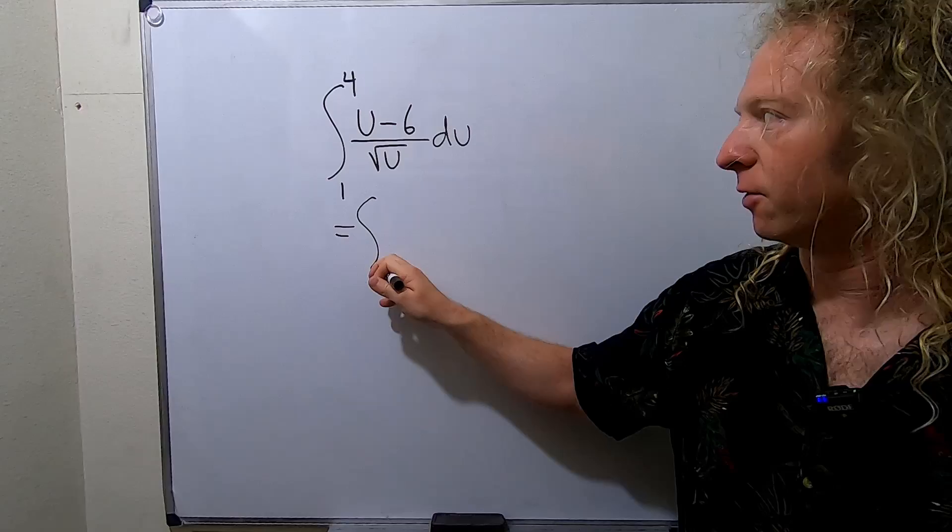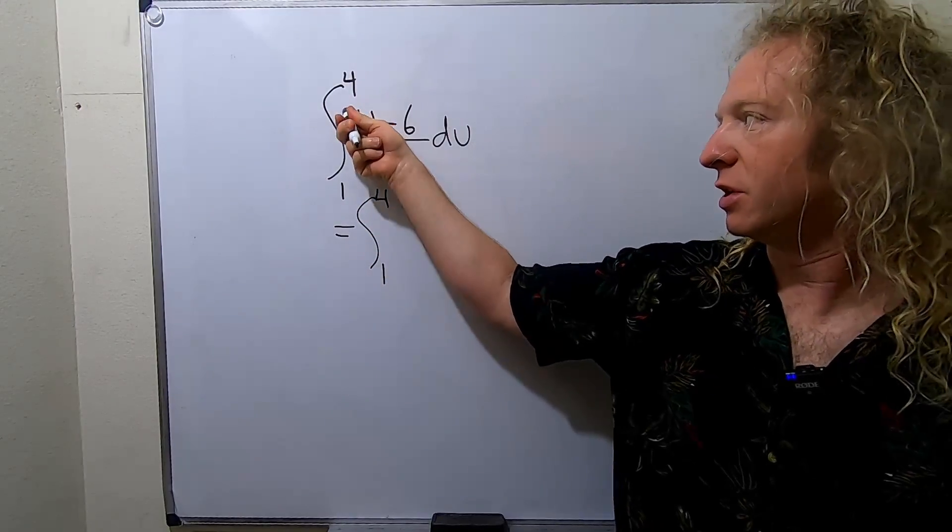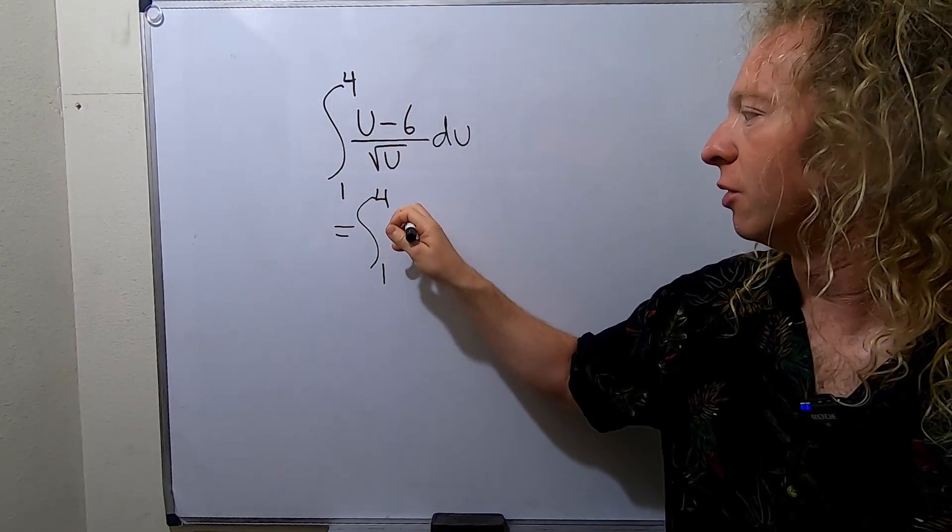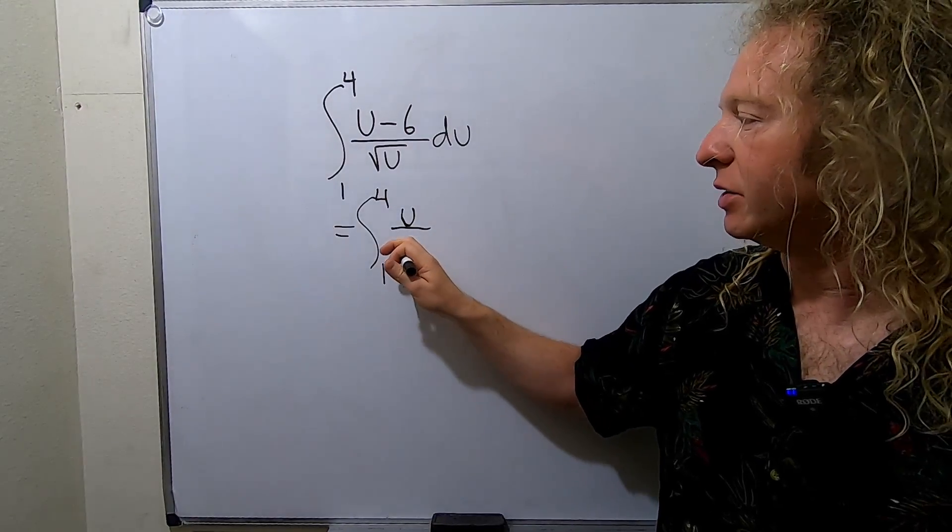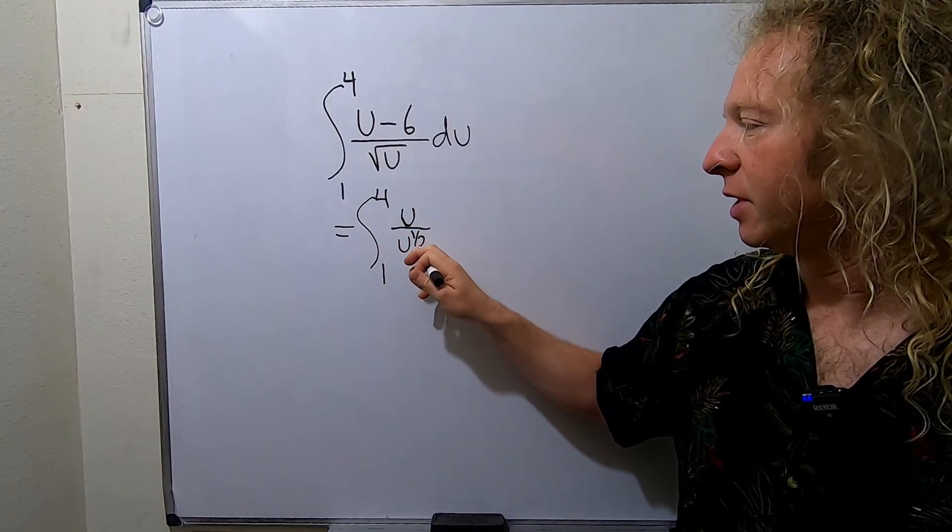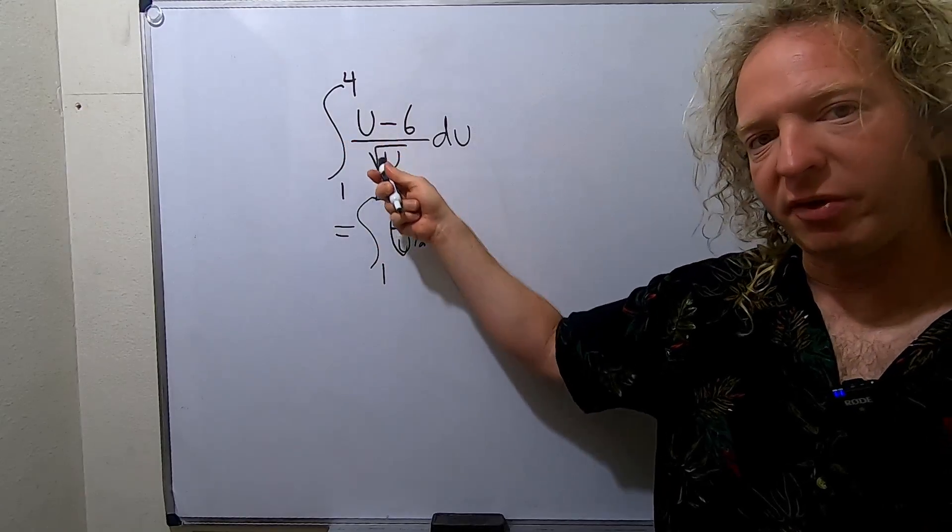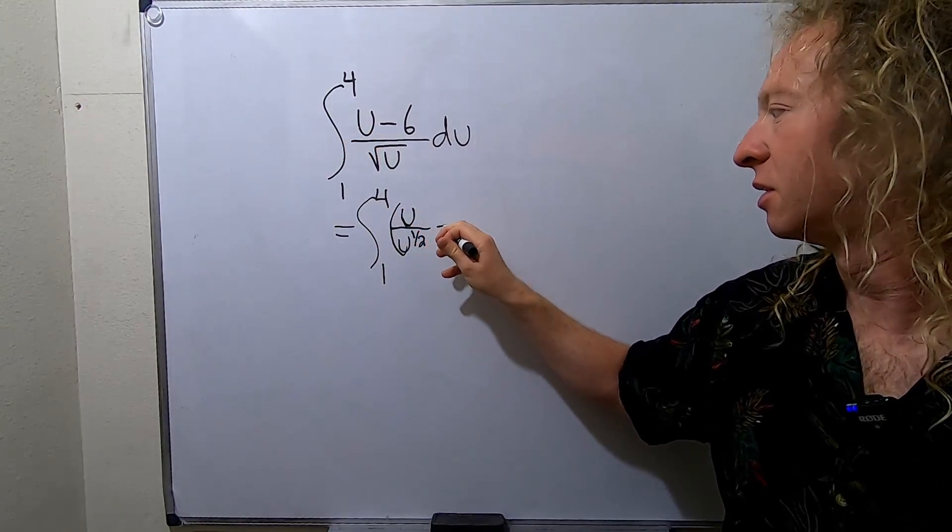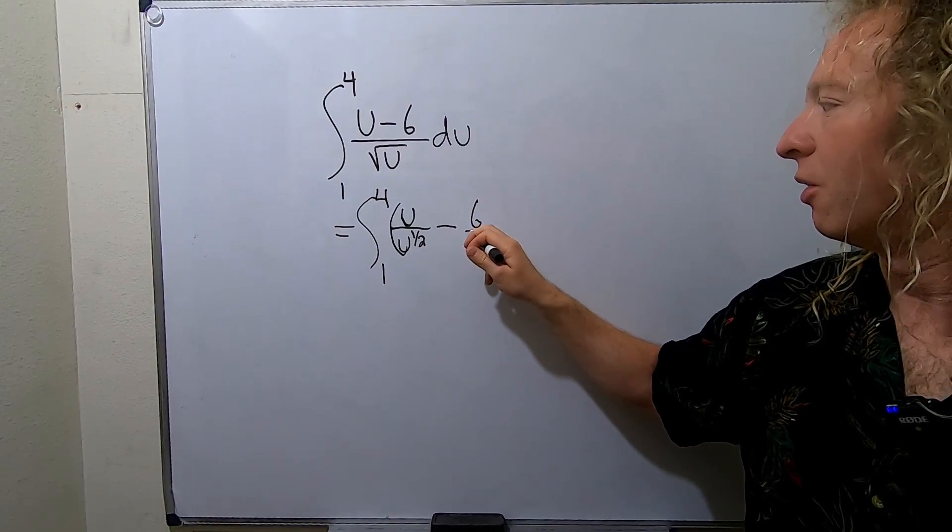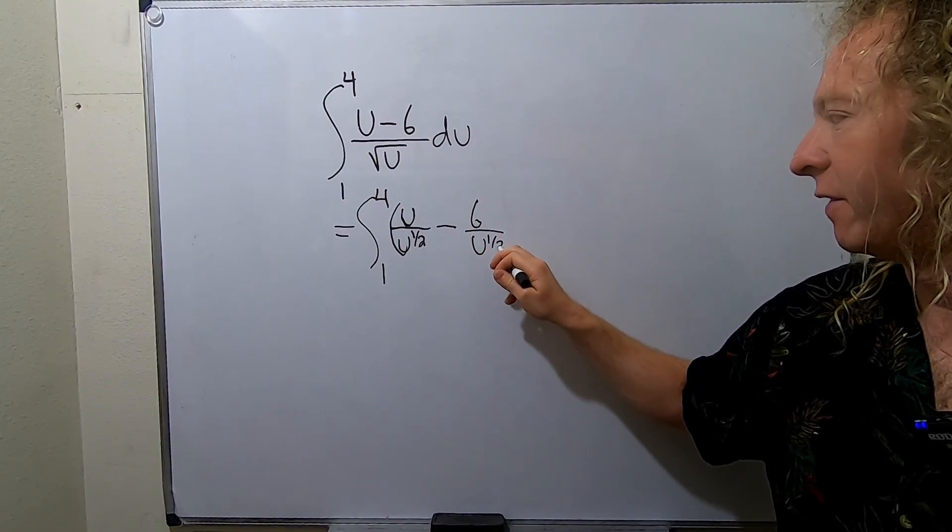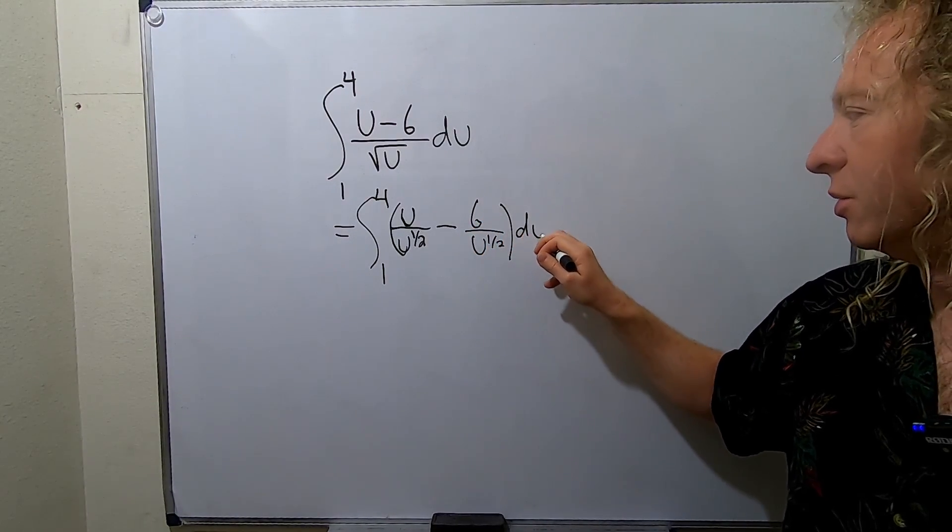We have the definite integral from 1 to 4. So it's this over this: u over, and I'm going to write the square root of u as u to the 1 half. It'll just make it easier to simplify. So it's u over this, minus this over this. So it'll be 6 over u to the 1 half, and then we have our du here.